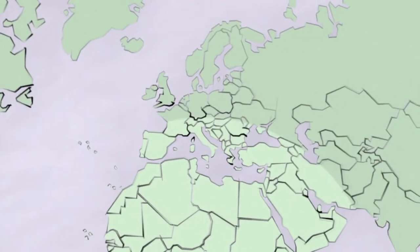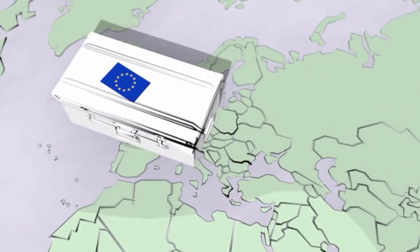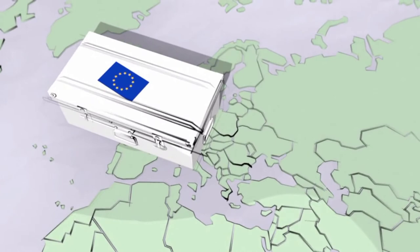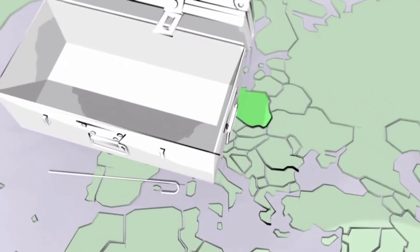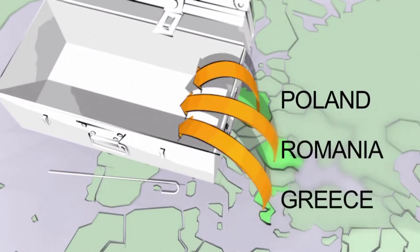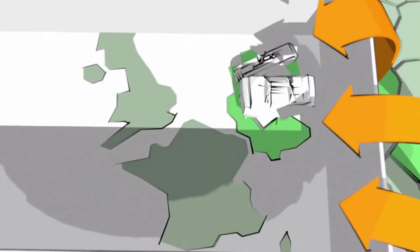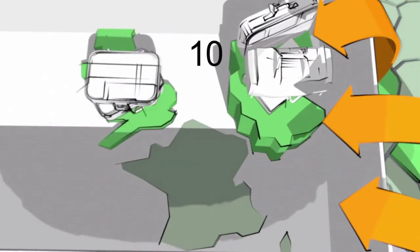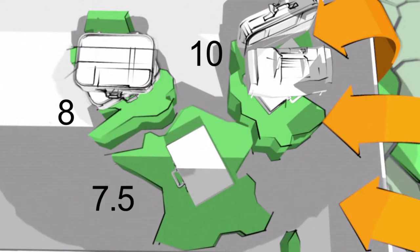However, it is Europe as a region that attracts the largest number of migrants, with 72 million currently on the continent. The migration comes mainly from Eastern Europe, with people from Poland, Romania, and Greece moving to the west of the continent. The countries receiving the greatest share of migrants are Germany with 10 million, Great Britain with 8 million, and France with 7.5 million.